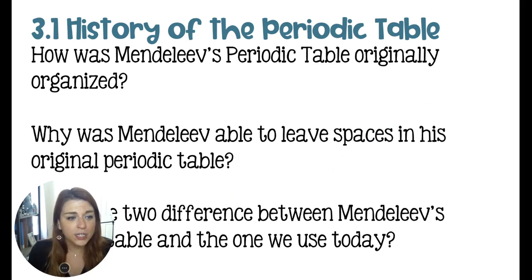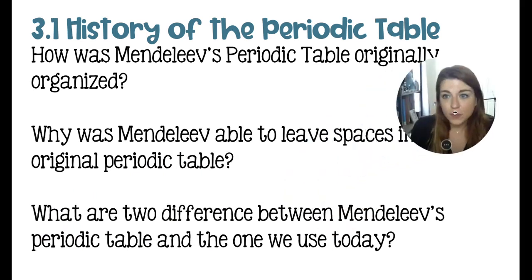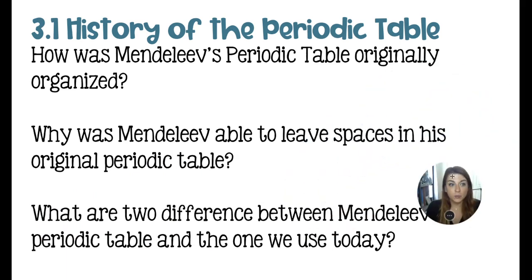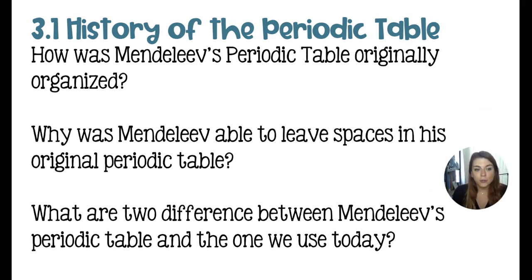The very first question here is on the history of the Periodic Table. How was Mendeleev's Periodic Table originally organized? Why was Mendeleev able to leave spaces in his original Periodic Table? And what are two differences between Mendeleev's Periodic Table and the one that we use today?